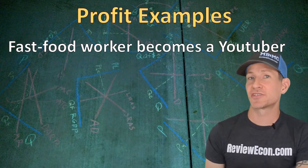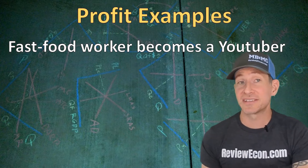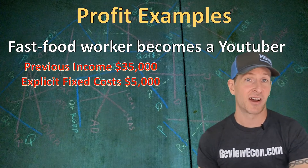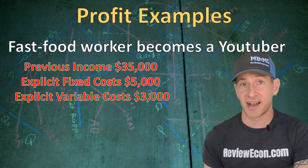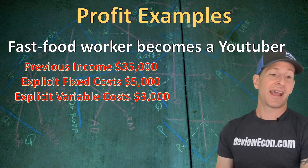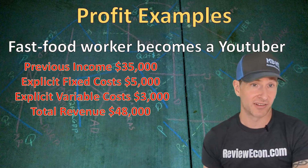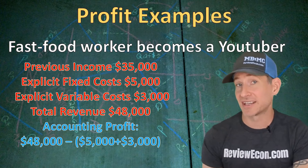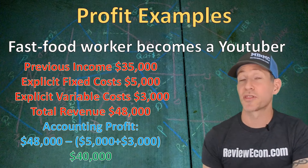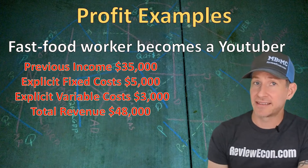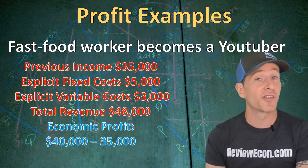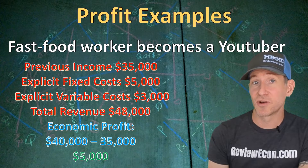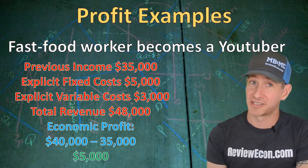If a fast food worker quits their job to become a YouTuber, let's say they had a previous income of $35,000 a year. They have an explicit fixed cost of $5,000 and a variable cost of $3,000 for their YouTube channel, with a total revenue of $48,000. Their accounting profit is $48,000 minus $8,000, bringing us to $40,000. Subtracting the implicit cost of $35,000 gives an economic profit of $5,000, meaning this YouTuber is earning more than their next best alternative.